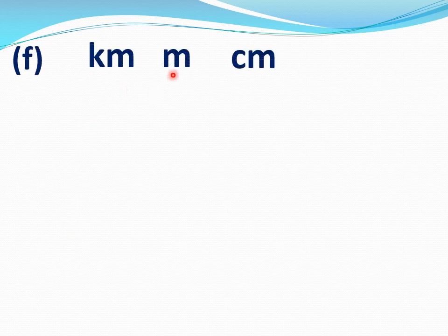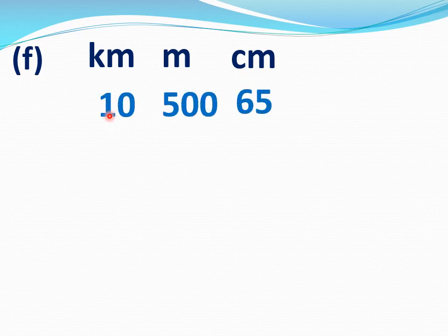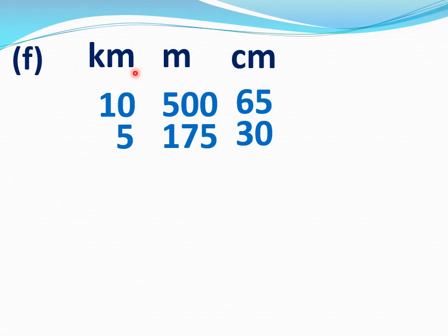F part. Note down very carefully. Write down kilometer, meter, centimeter. Write first number: 10 kilometers 500 meters 65 centimeters. Now write second number: 5 kilometers 175 meters 30 centimeters.